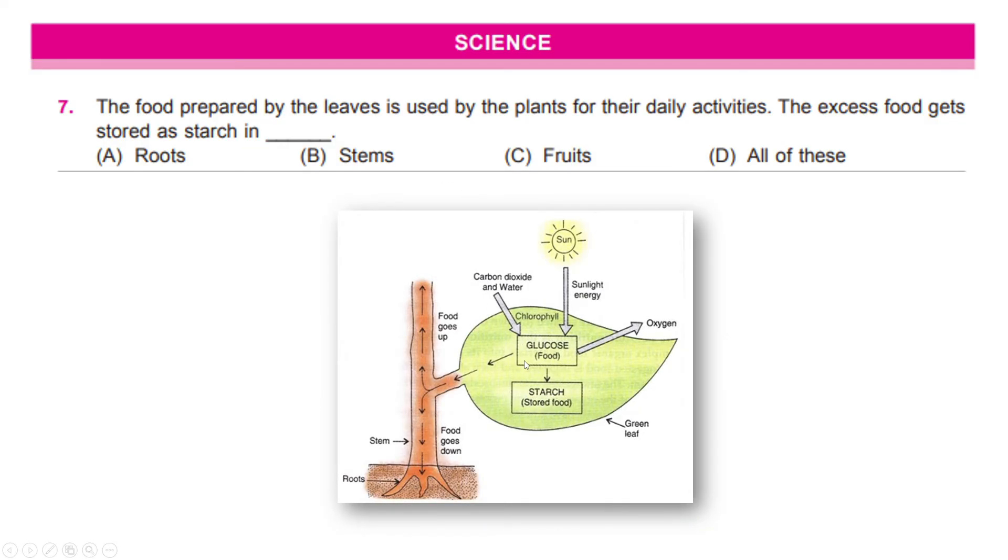So, leaf which produces the fluid or glucose, it flows to the top as well as to the bottom to the stem and roots. So, the food goes everywhere in the plant. So, the right answer for this is option D. All of these.